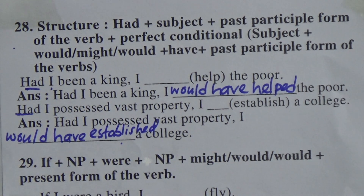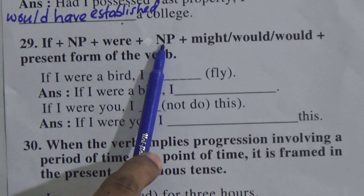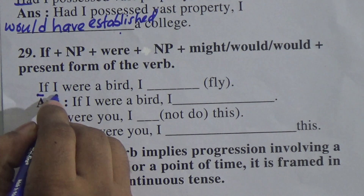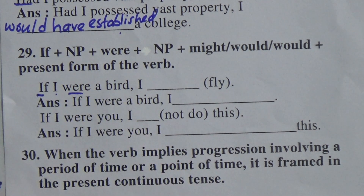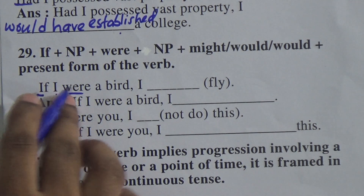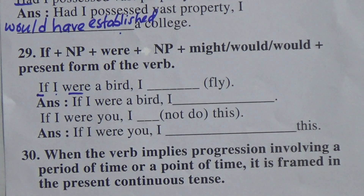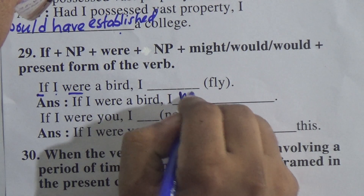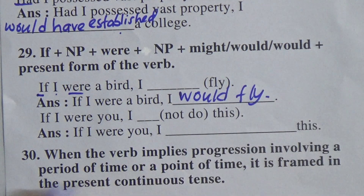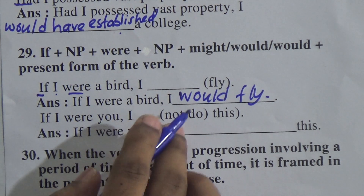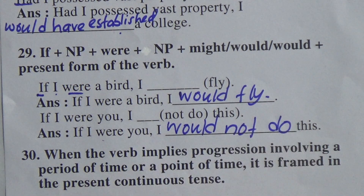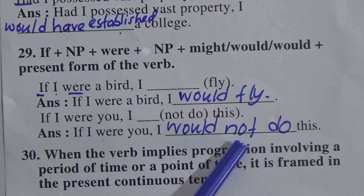Rule 29: if + subject + were → past conditional. If the sentence starts with 'if + subject + were', we apply past conditional, which means subject + would/could/might + base form of the verb. Example: 'If I were a bird, I would fly.' Another: 'If I were you, I would not do this.' So if + subject + were → past conditional: subject + would/could/might + base form of the verb.